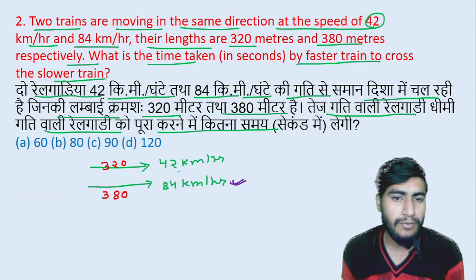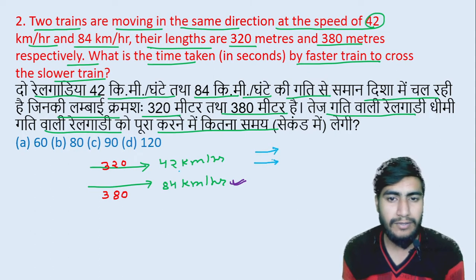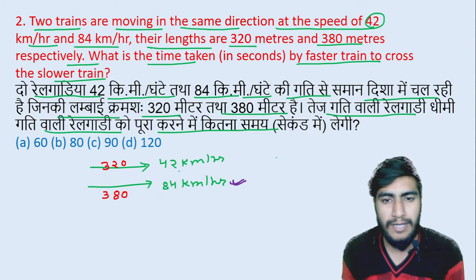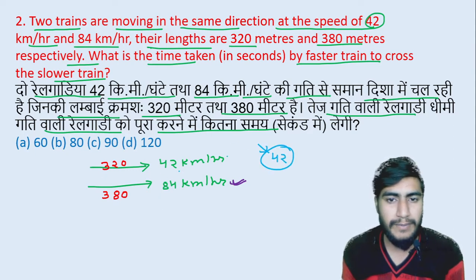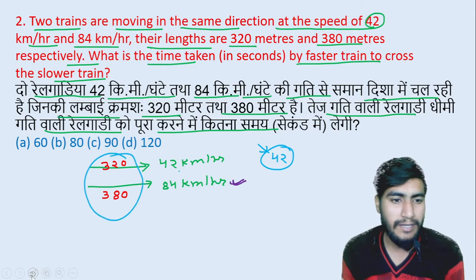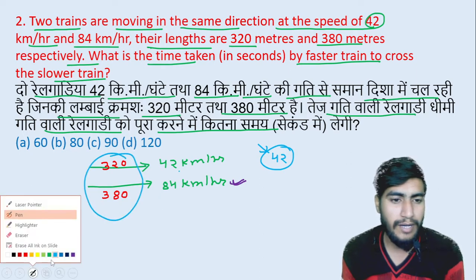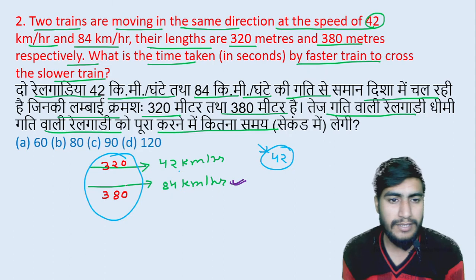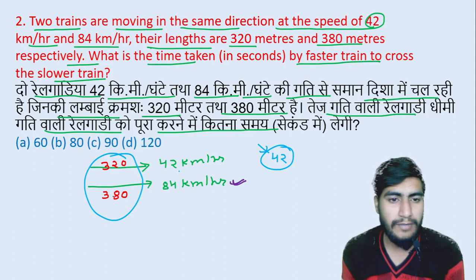The speed of these two trains are relative speeds. If both are moving in the same direction, the relative speed will be subtracted: 84 minus 42 equals 42 km per hour. Since both are in the same direction, the distance will be 320 plus 380, which equals 700 meters.